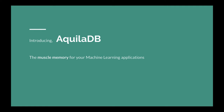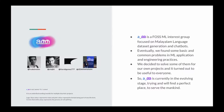Let me introduce AquilaDB — the muscle memory for your machine learning applications. AquilaDB is being developed under the EMMA brand. EMMA is a first ML interest group focused on Malayalam language dataset generation and chatbots. Eventually they found that some basic and common problems in ML applications should be solved, so they decided to solve some of them for their own projects and it turned out to be very useful to everyone else. In that sense, EMMA is currently growing out of its original boundaries.